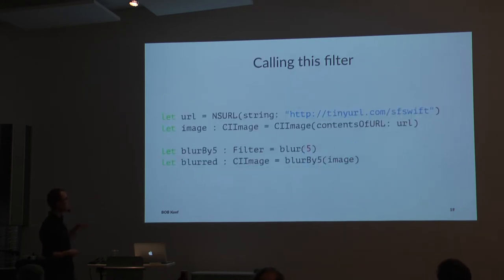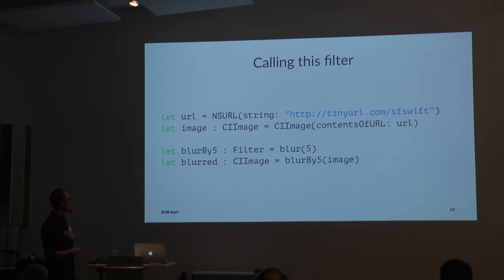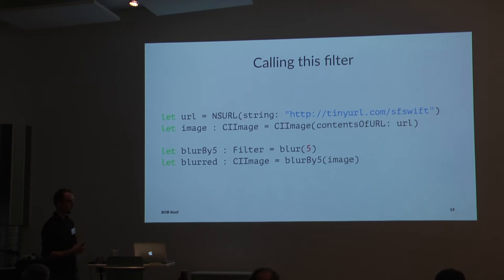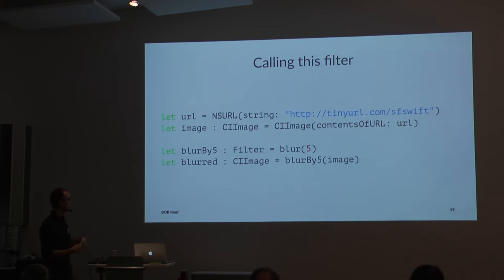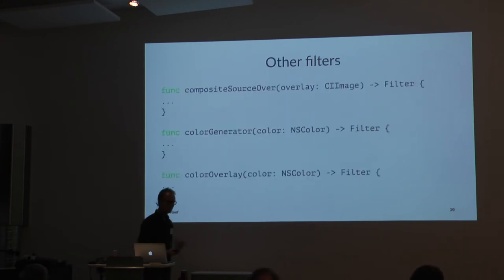To actually run this, I get a CIImage by reading the contents of a URL, then create a filter by calling blur(5), which gives me a function from CIImage to CIImage. To get the blurred image out, I apply this blur function to the image from the URL. So this code reads an image from a URL, creates a Gaussian blur filter, and blurs the image accordingly.